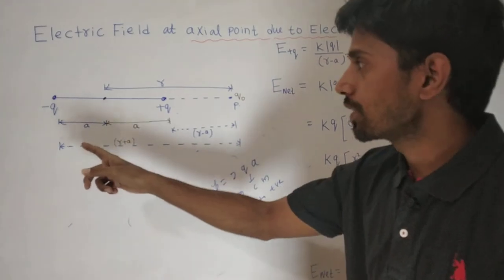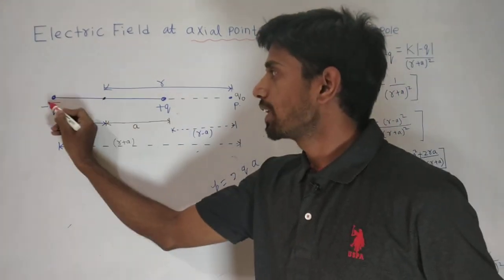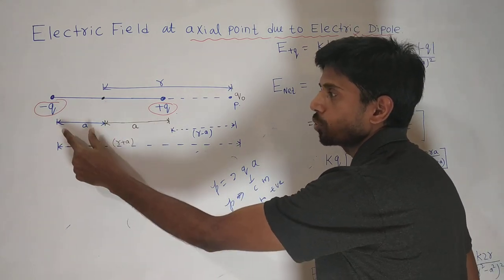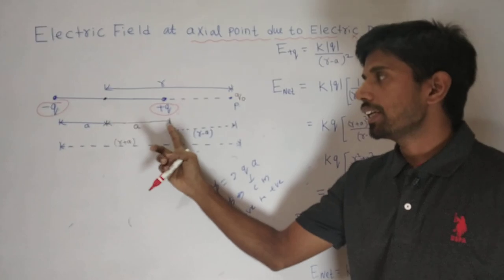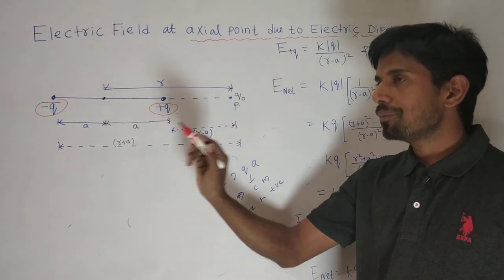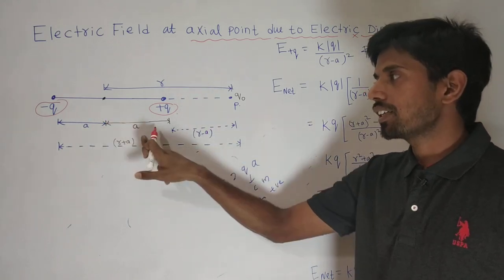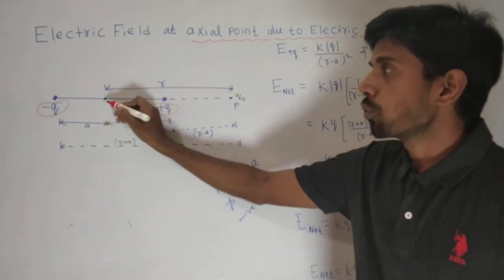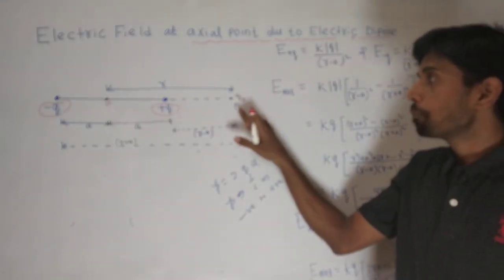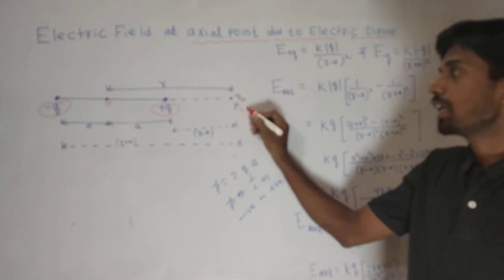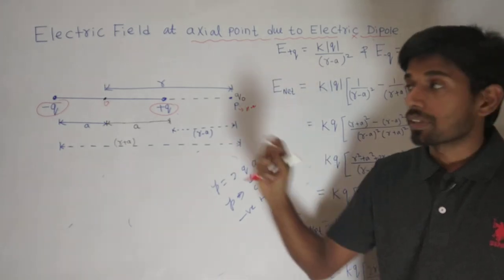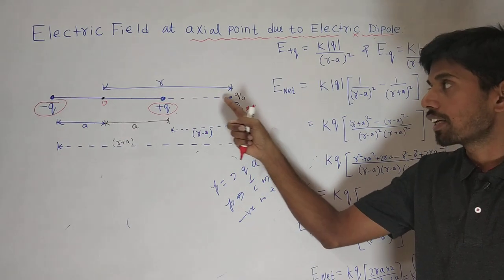Here you can see this is a system of two charges — minus Q charge and plus Q charge. The distance between them is 2A, and we call this the dipole with length 2A. We take this as the origin. Now we have to find the electric field at point P, where P is the axial point. Axial point means along the axis — when the point lies on the same line as the charge system.